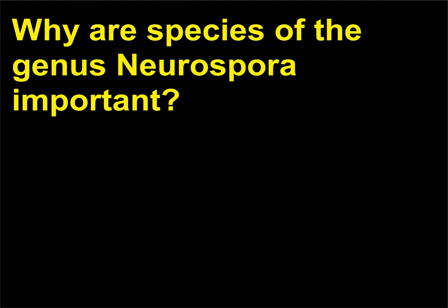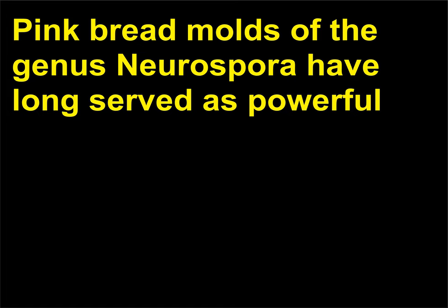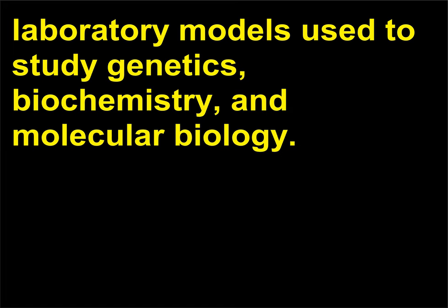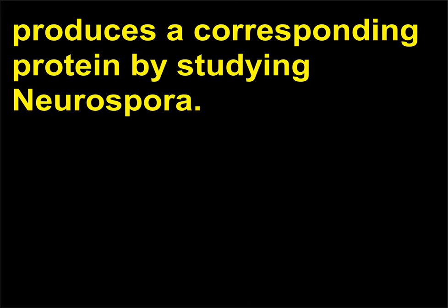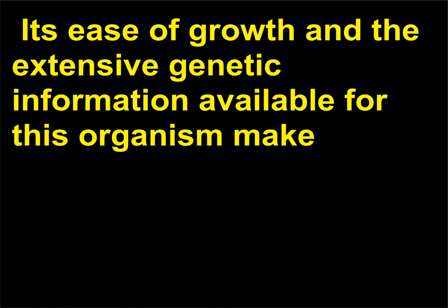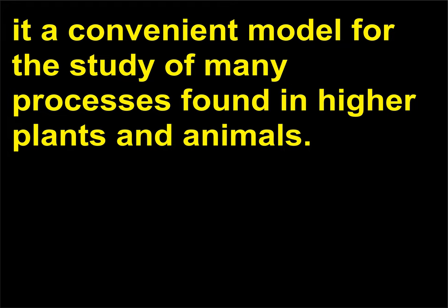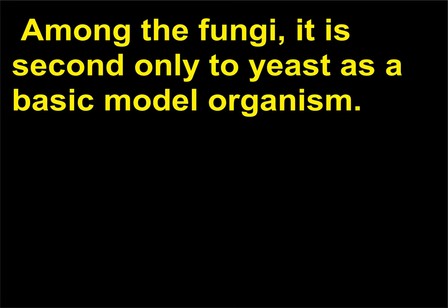Why are species of the genus Neurospora important? Pink bread molds of the genus Neurospora have long served as powerful laboratory models used to study genetics, biochemistry, and molecular biology. Scientists first demonstrated the concept that one gene produces a corresponding protein by studying Neurospora. Its ease of growth and the extensive genetic information available for this organism make it a convenient model for the study of many processes found in higher plants and animals. Among the fungi, it is second only to yeast as a basic model organism.